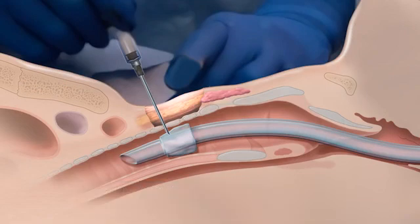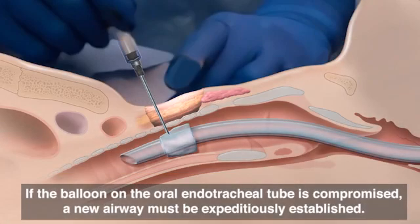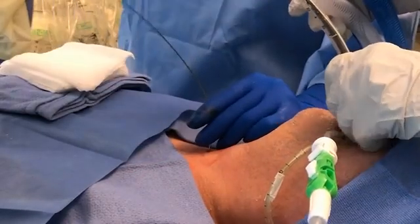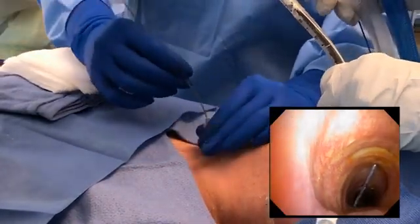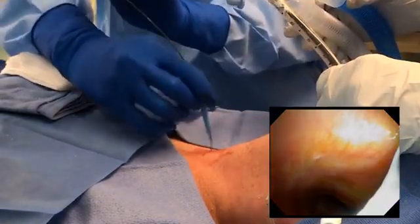In the event that the patient's condition becomes clinically unstable, or there is difficulty performing the tracheostomy while the balloon is intact, the oral endotracheal tube is simply advanced to its original location and normal ventilation is resumed. Additional supplies or personnel can be gathered. If the balloon is compromised, so too is the ability to provide positive pressure ventilation, and a new airway must be expeditiously established by means of either a tracheostomy or oral endotracheal intubation. Feed the guide wire through the needle and visualize it while advancing it distally toward the carina. Remove the needle over the wire, keeping the wire in the trachea at all times.